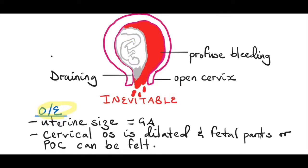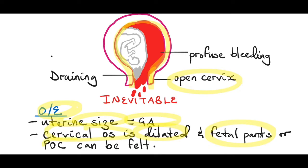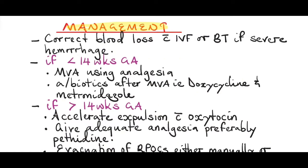When you examine the patient, you find that the height of the fundus is still the same as the gestational age, because the abortion has not yet occurred - it's almost about to occur. The cervix is open. When you do a vaginal examination, you find that the cervical os is dilated and you might also feel fetal parts.